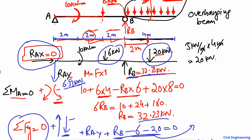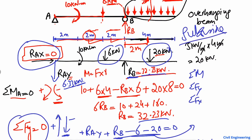This is the procedure for finding support reactions: first draw the free body diagram, then calculate all the loads on the beam, and then apply the equilibrium equations — summation of moments, summation of vertical forces, and summation of horizontal forces equal to zero. Thank you for watching, and don't forget to subscribe to our channel for daily civil engineering videos.